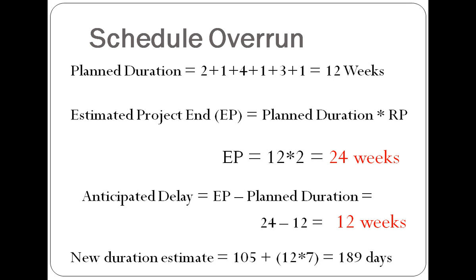Recall that the project was estimated to be 105 days in duration. Considering 7-day work weeks, a 12-week delay multiplied by 7 days a week indicates a delay of 84 days. Adding 84 to the 105-day initial estimate means that the new estimate is 189 days.